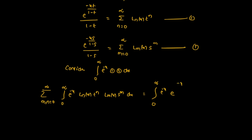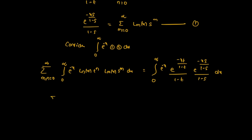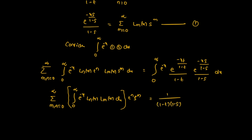The right-hand side becomes the integral from 0 to infinity of e^(-xt/(1-t)) / (1-t) · e^(-xs/(1-s)) / (1-s) · e^(-x) · ln(x) · ln(x) dx. Since t^n and s^m are constants, we factor them out: 1/(1-t) · 1/(1-s) · integral of e^(-x(1 + t/(1-t) + s/(1-s))) dx.